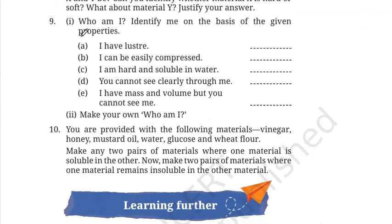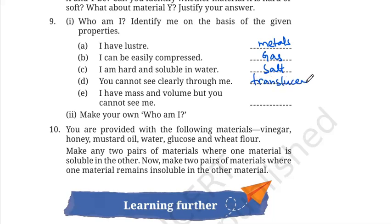Number nine — who am I? Identify based on properties. I have lustre — that is metal; metals have a shiny surface. I can be easily compressed — that is gas; gases can be easily compressed. I am hard and soluble in water — that is salt. You cannot see clearly through me — that is translucent; transparent means you can see clearly, opaque means you cannot see through it, translucent means you cannot see clearly. I have mass and volume but you cannot see me — that is air; air has mass and volume, which is why air is matter, but you cannot see it.